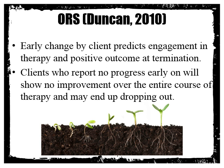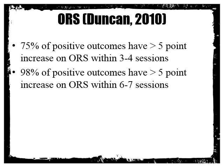Early change by a client predicts engagement in therapy and positive outcome at termination. Clients who report no progress early or show no signs of improvement over the entire course of therapy may end up dropping out. This is based on research evidence: the first seven sessions really do predict how the rest of therapy is going to go. 75% of positive outcomes have a more than five-point increase on the ORS within three to four sessions, and 98% of positive outcomes have a more than five-point increase within six to seven sessions. So if you reach the seventh session without a more than five-point increase, it may be time to think about termination.